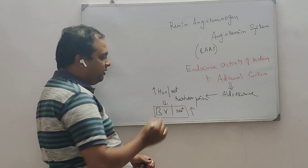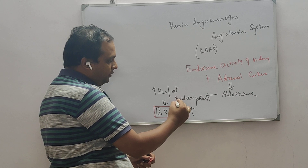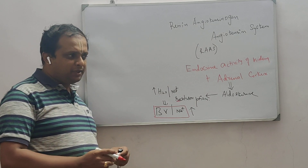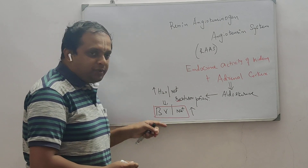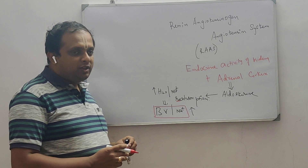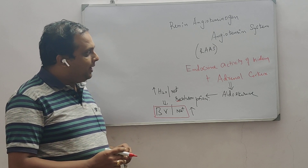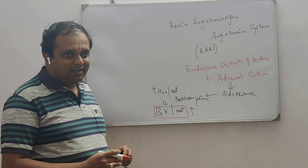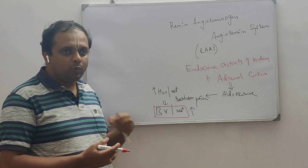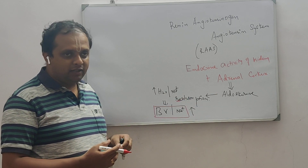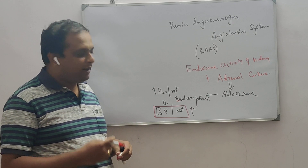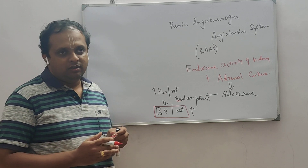Blood volume will be increased as well as sodium ion level will be increased. By the word reabsorption, we mean the absorption taking place in the tubule. To summarize: in the renin-angiotensin system, it involves both the endocrine aspect of the kidney and the adrenal cortex. The adrenal cortex secretes aldosterone, which increases water and sodium reabsorption at the tubule, raising blood volume and sodium ion levels.